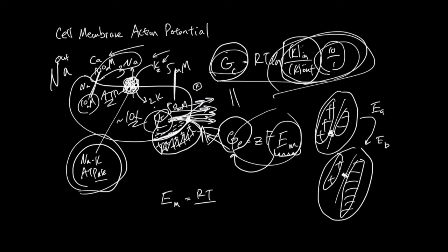Which is RT over ZF ln. And this is element inside concentration over element outside concentration. This equation says that when you have concentration difference of a molecule of this charge across a membrane, then there is this much potential of that membrane, given that there's an opening, to move things in and out.